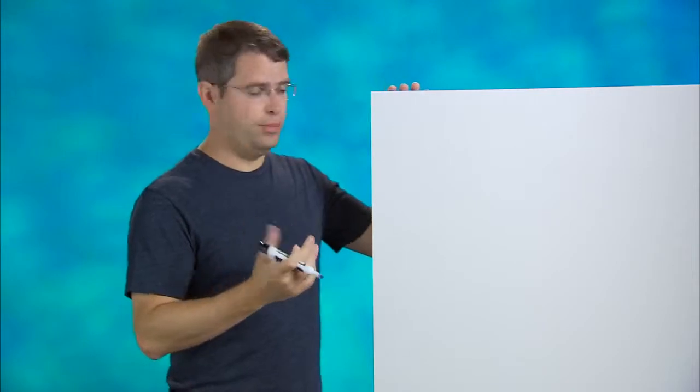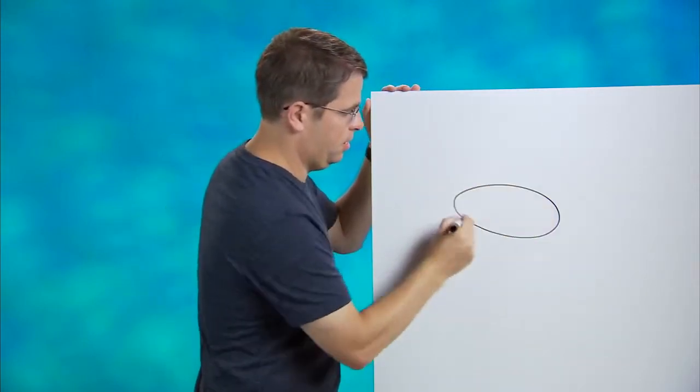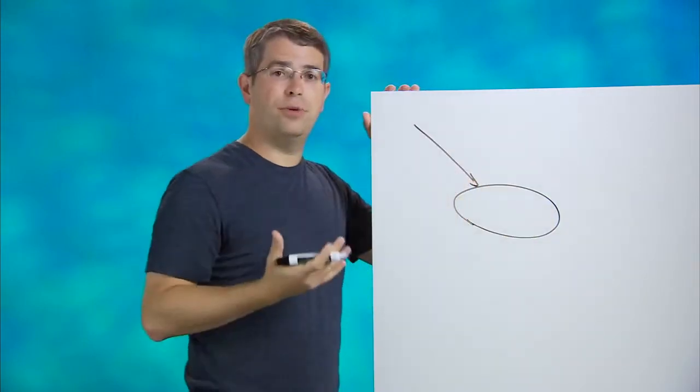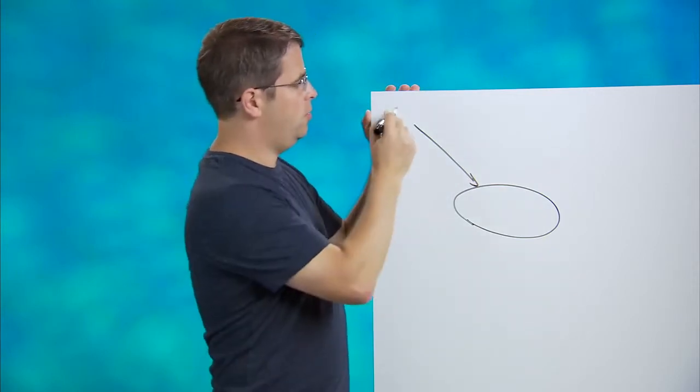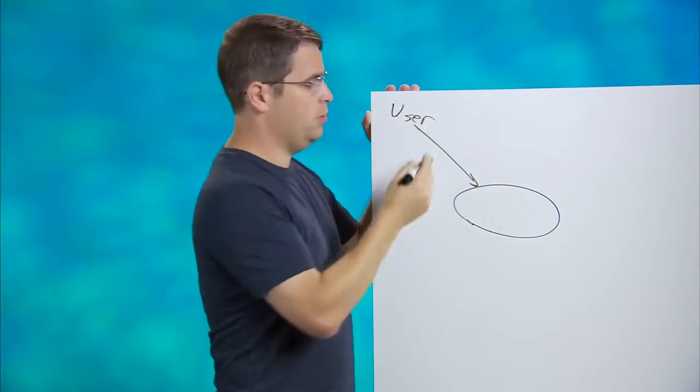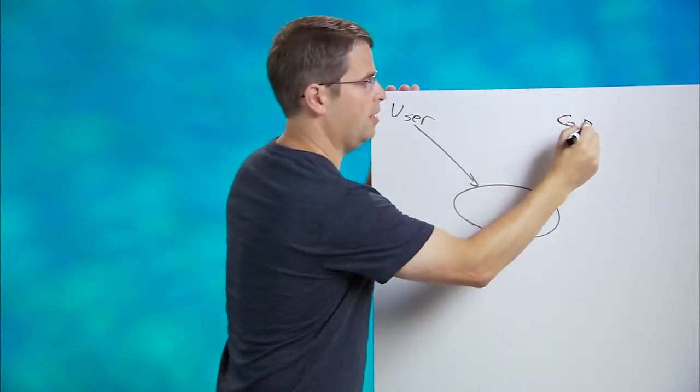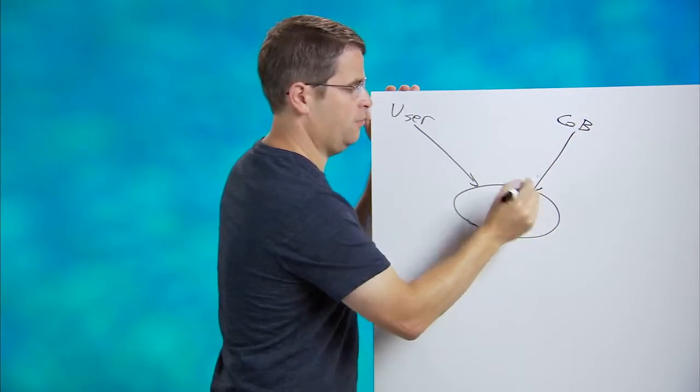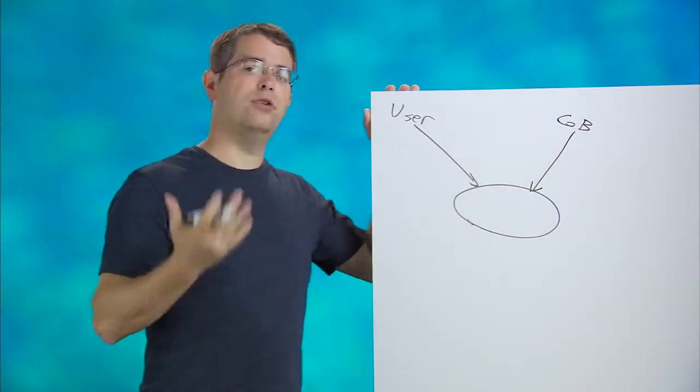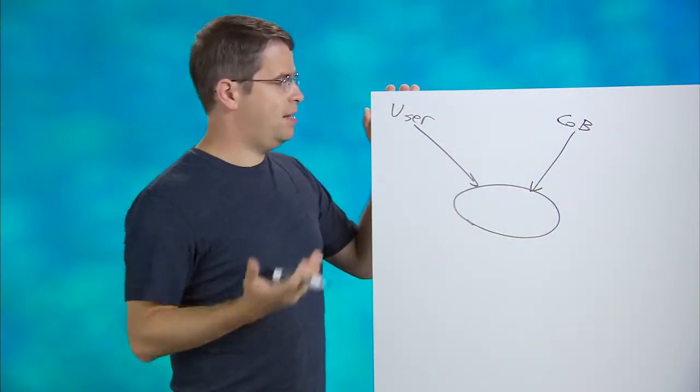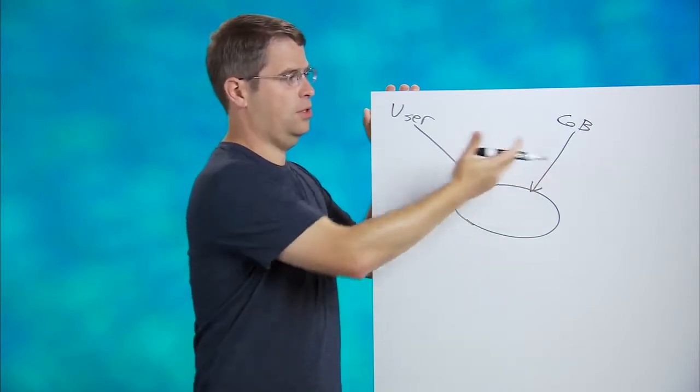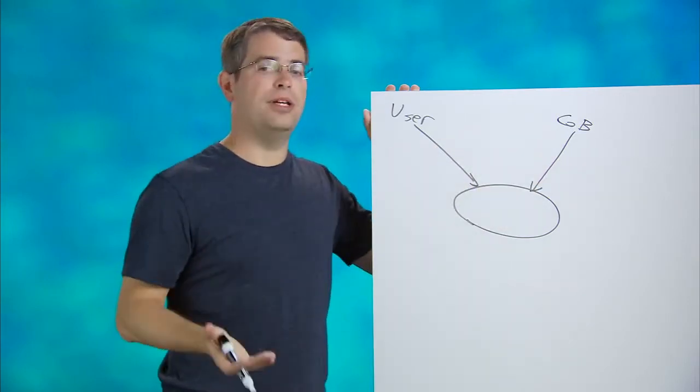Cloaking is essentially showing different content to users than to Googlebot. So imagine that you have a web server right here. And a user comes and asks for a page. So here's your user. You give him some sort of page. Everybody's happy. And now let's have Googlebot come and ask for a page as well. And you give Googlebot a page. Now, in the vast majority of situations, the same content goes to Googlebot and to users. Everybody's happy.